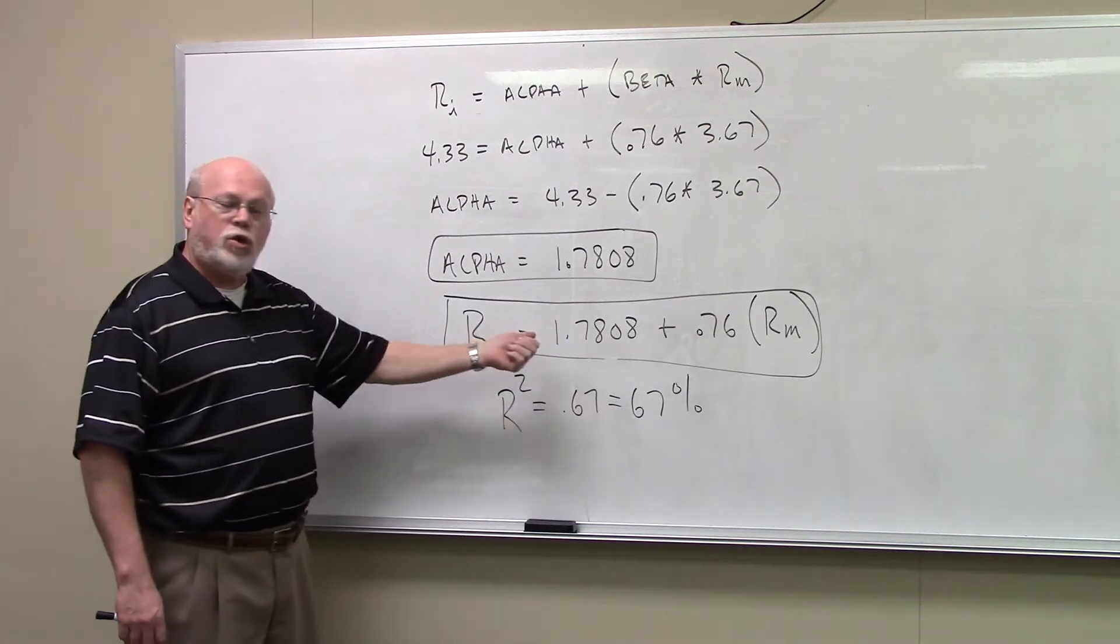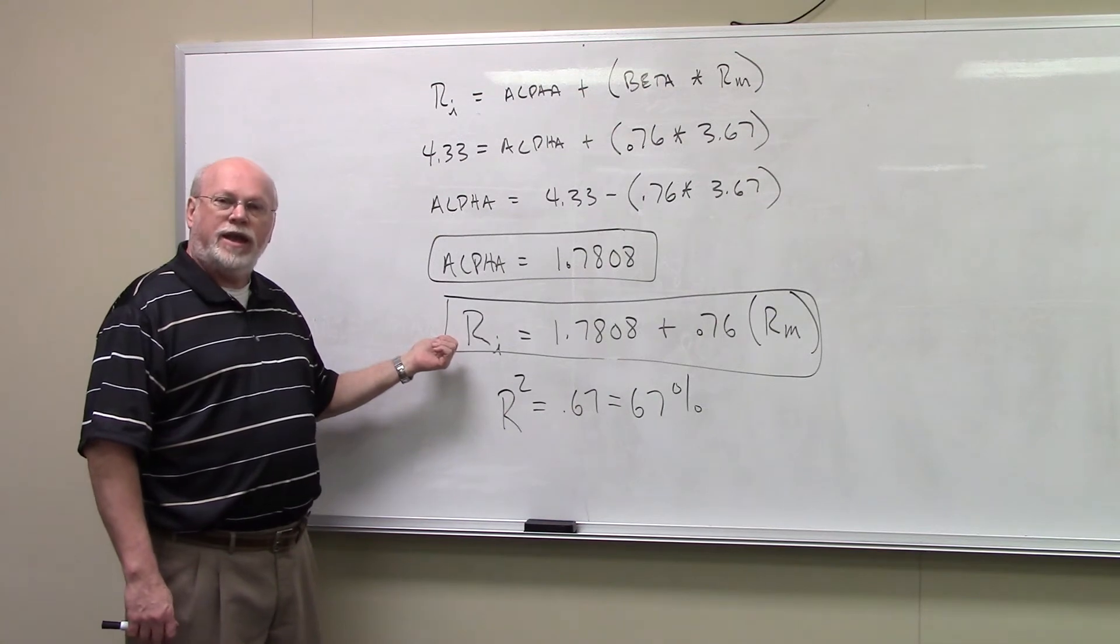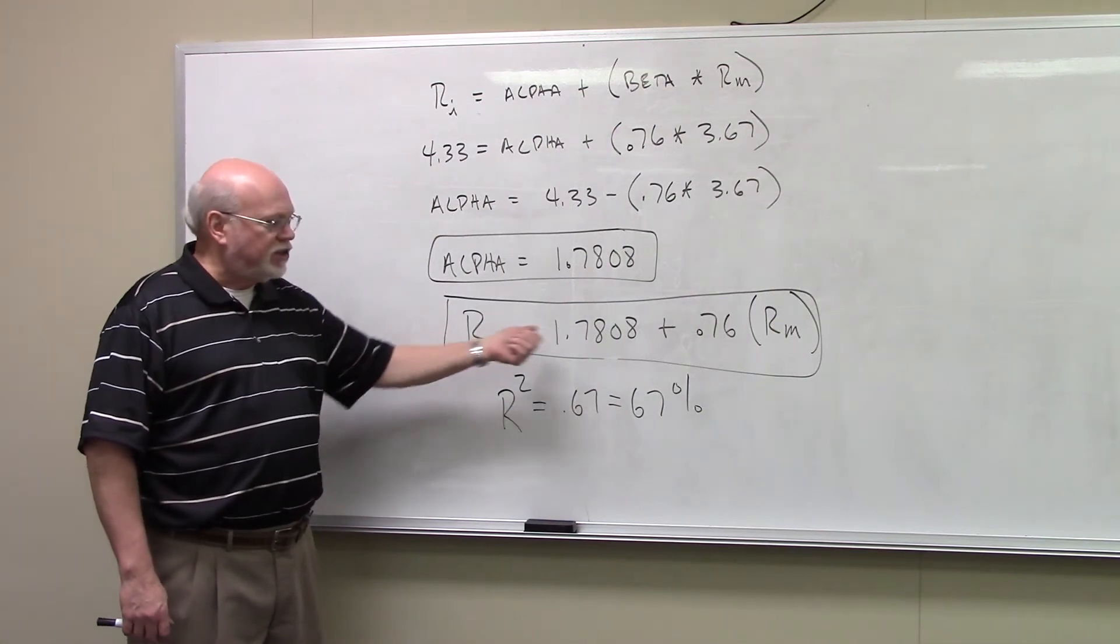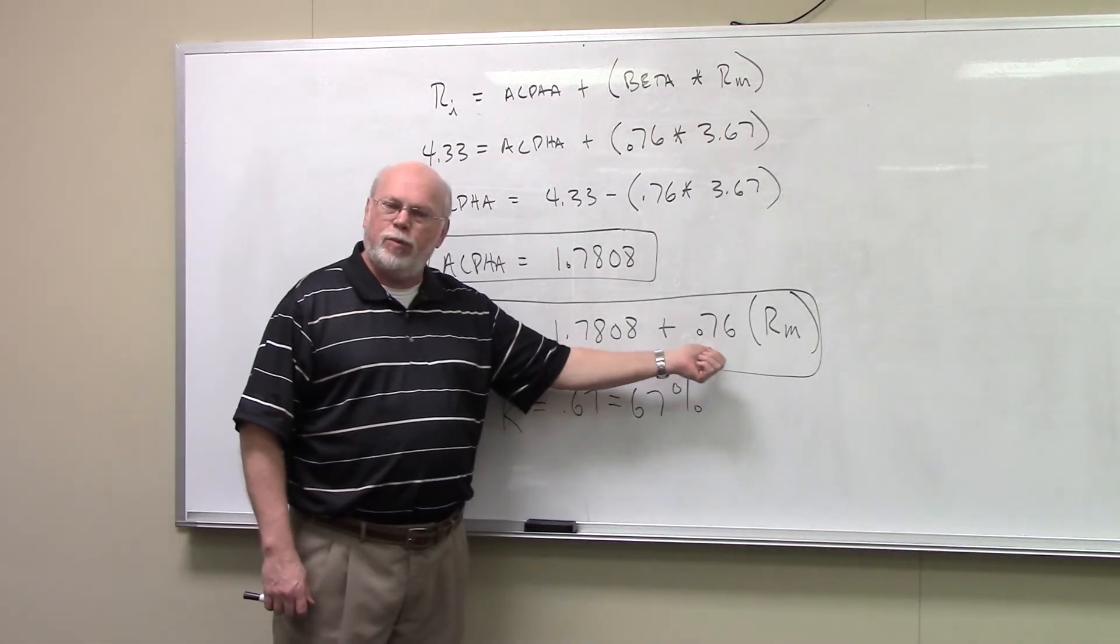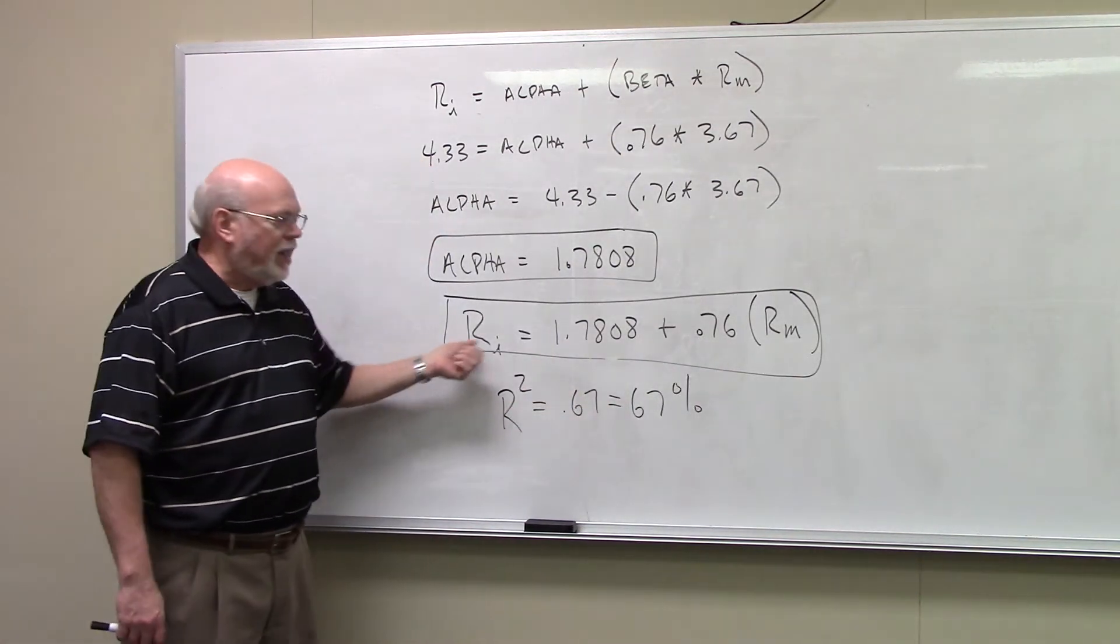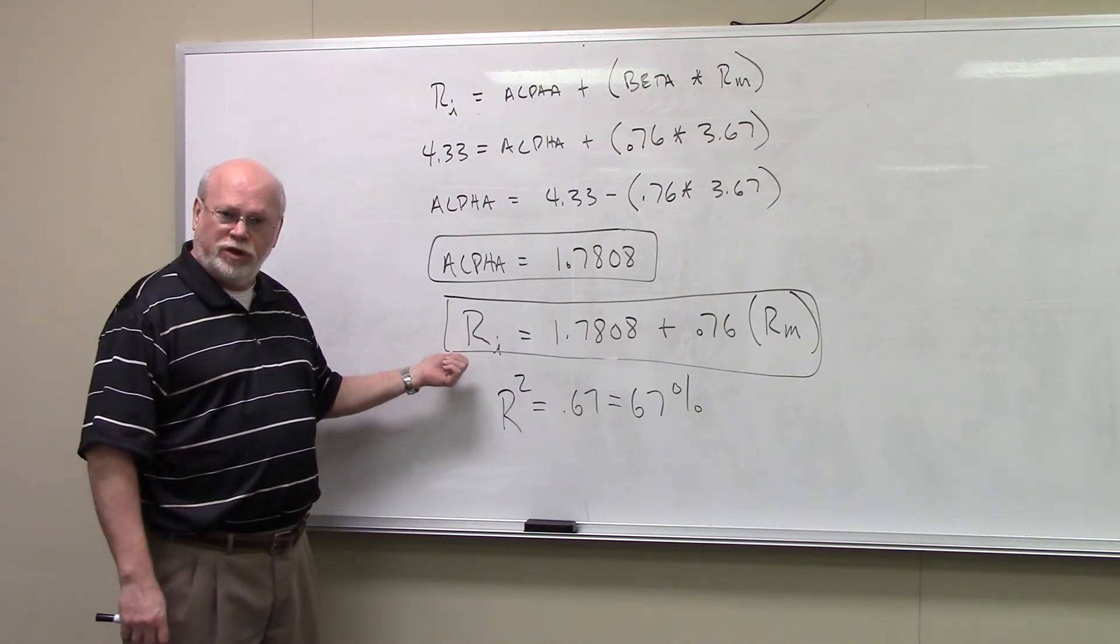This little equation right here in investments is known as the characteristic line. The characteristic line is this simple linear regression that we run, typically to come up with beta. But it also is a way of defining an expected return for the security.